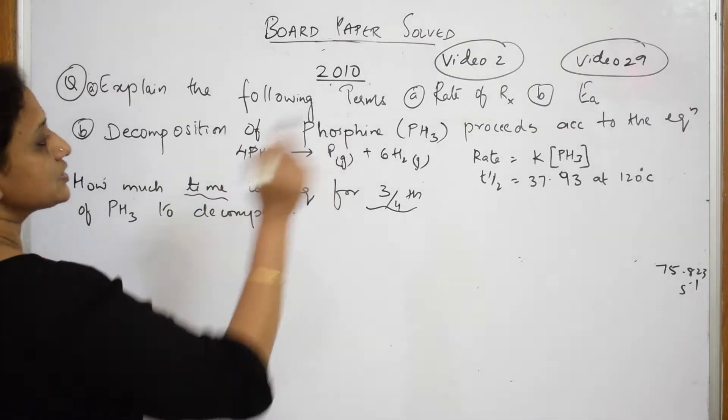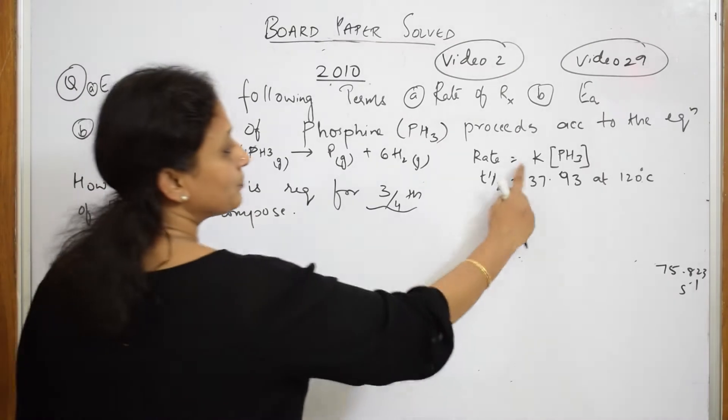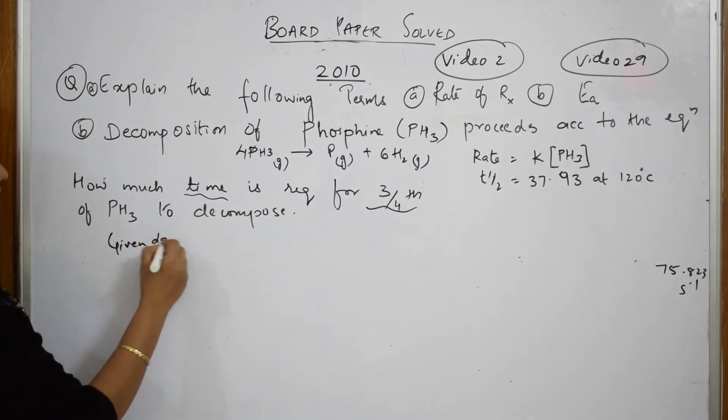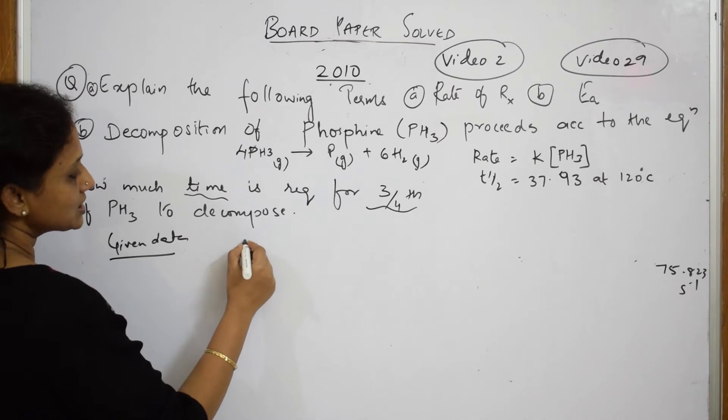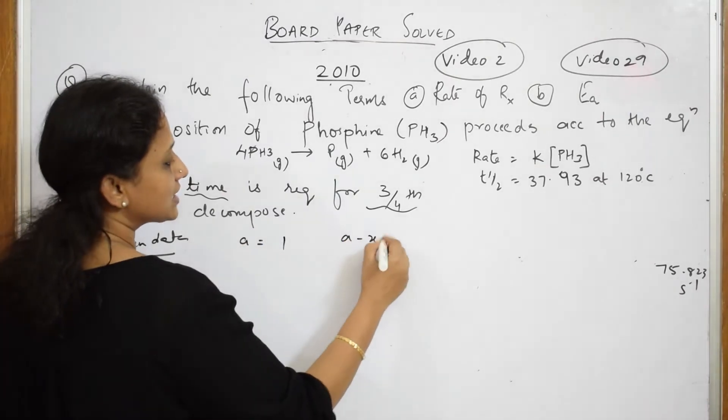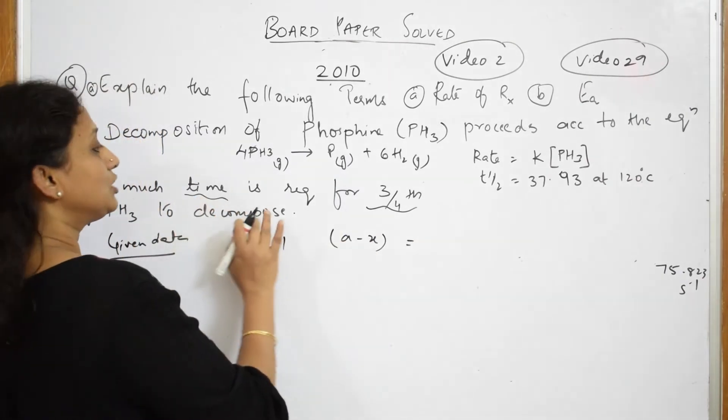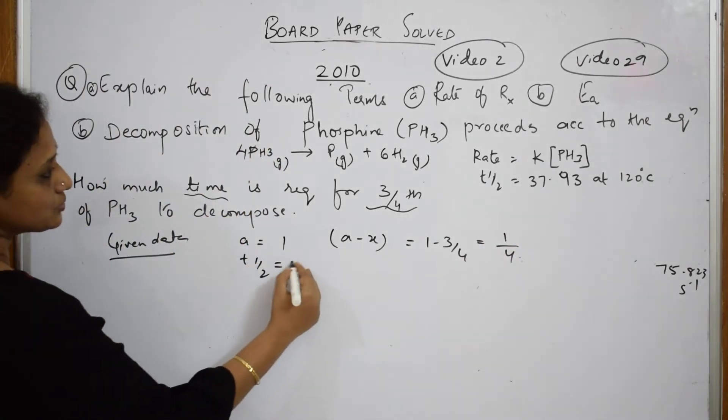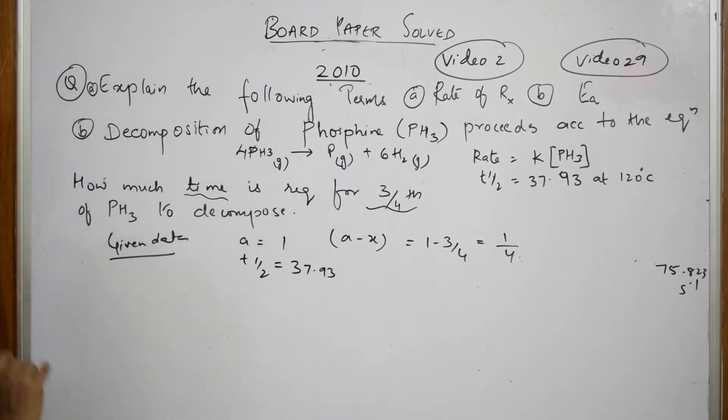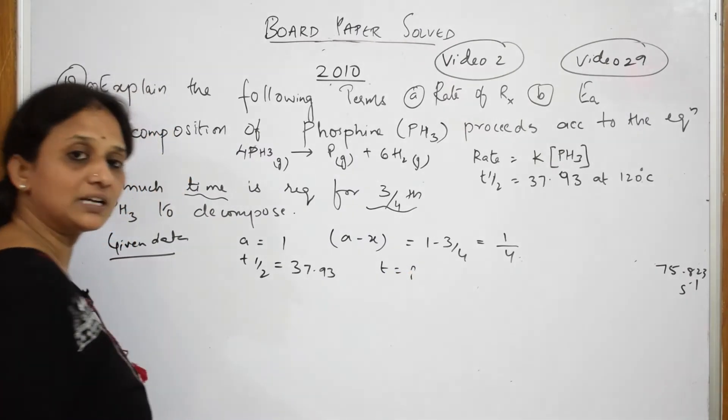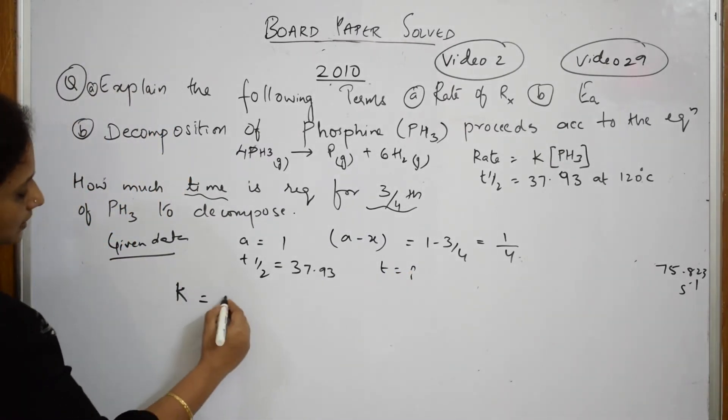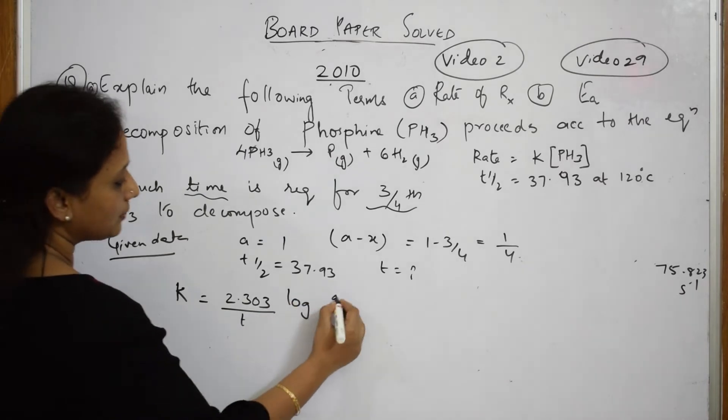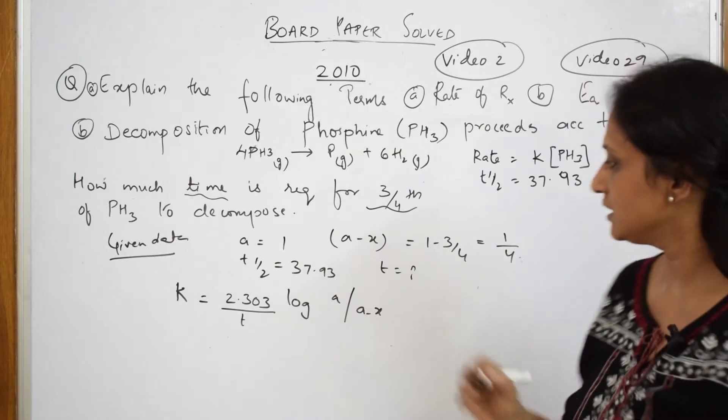They have given this particular data, what should I find out? I have to find out the time for 3/4 of the decomposition. Now, as soon as such question is given to you, see whether it is first order reaction, second order, or zero order. As we know, rate depends upon only one concentration term, so it is first order reaction. So write the formula. Given data in that, notice A is equal to 1. A minus X is given to us because there is how much time to decompose, the leftover, right. So 1 minus 3/4, this is 1/4 part is given to me. What else is given? T half is given to me, 37.93. What should I find out? I have to find out T. Now write the formula: K is equal to 2.303 by T log A by A minus X. This is what we have learnt already.